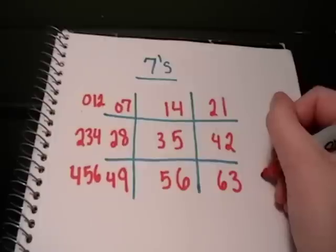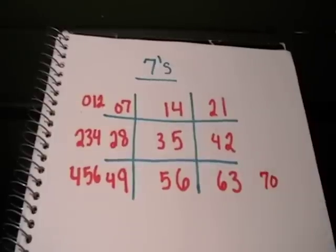Then we will put 70 on the outside. This is the seven times tables.